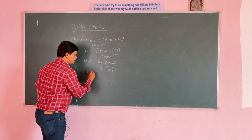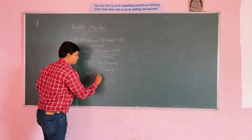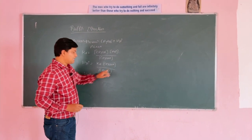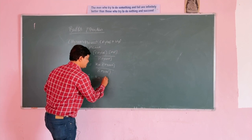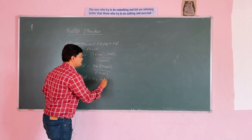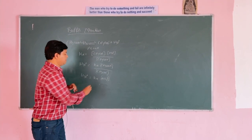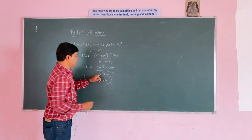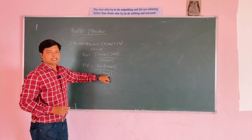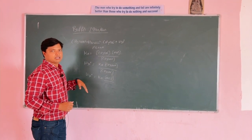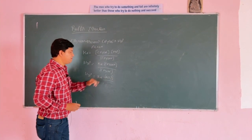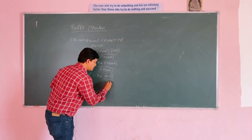H3O plus equals Ka times acid concentration divided by CH3COO minus concentration. CH3COOH is the acid, and CH3COO minus is the salt form — when in salt form it is ionized, so we write it as salt.